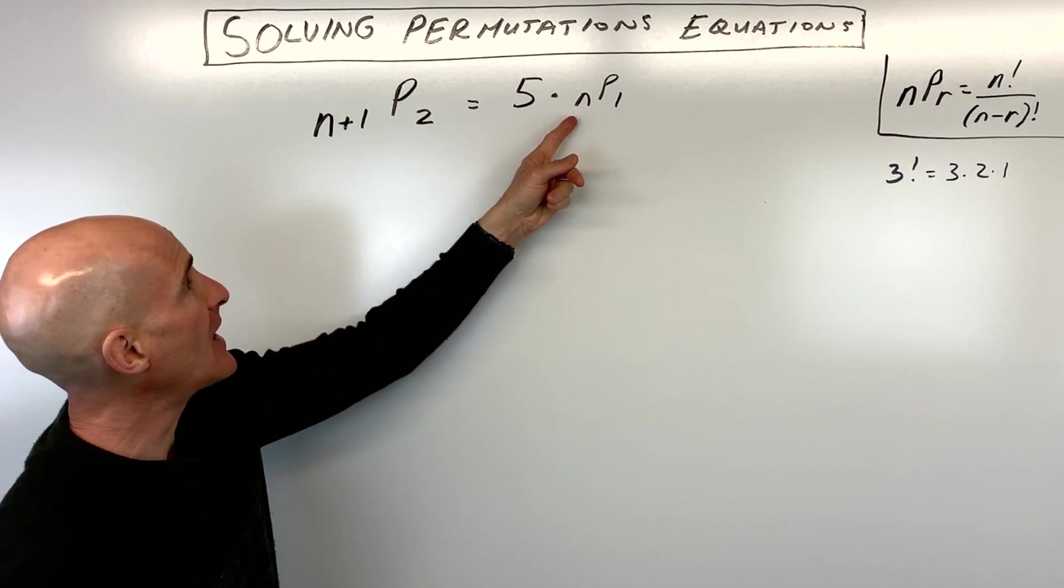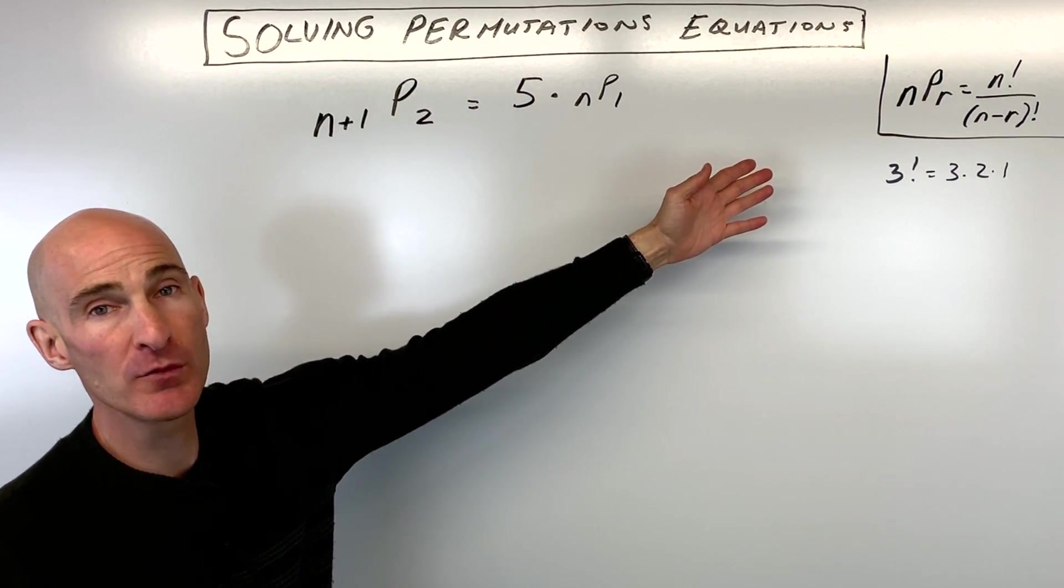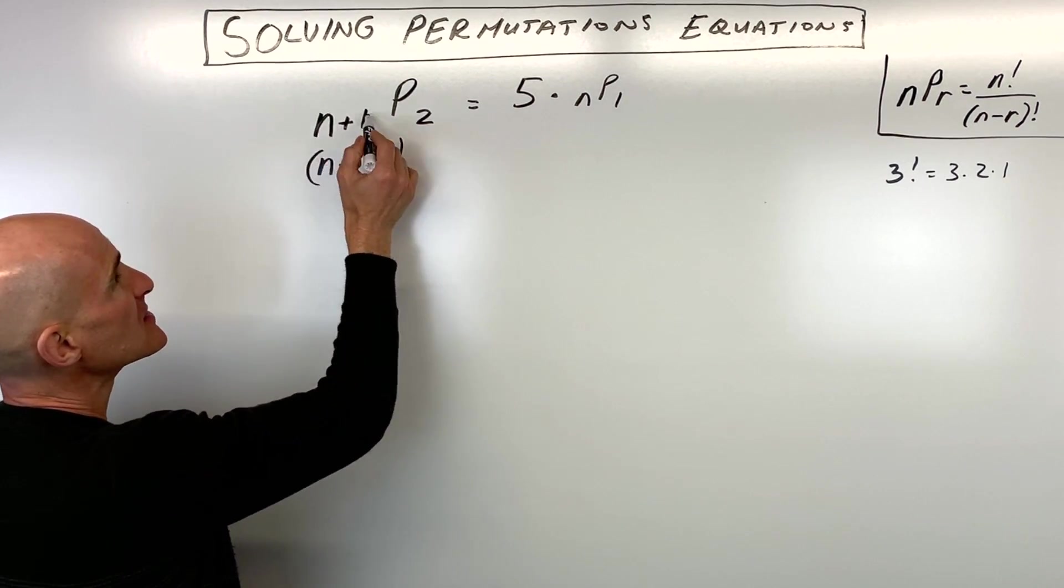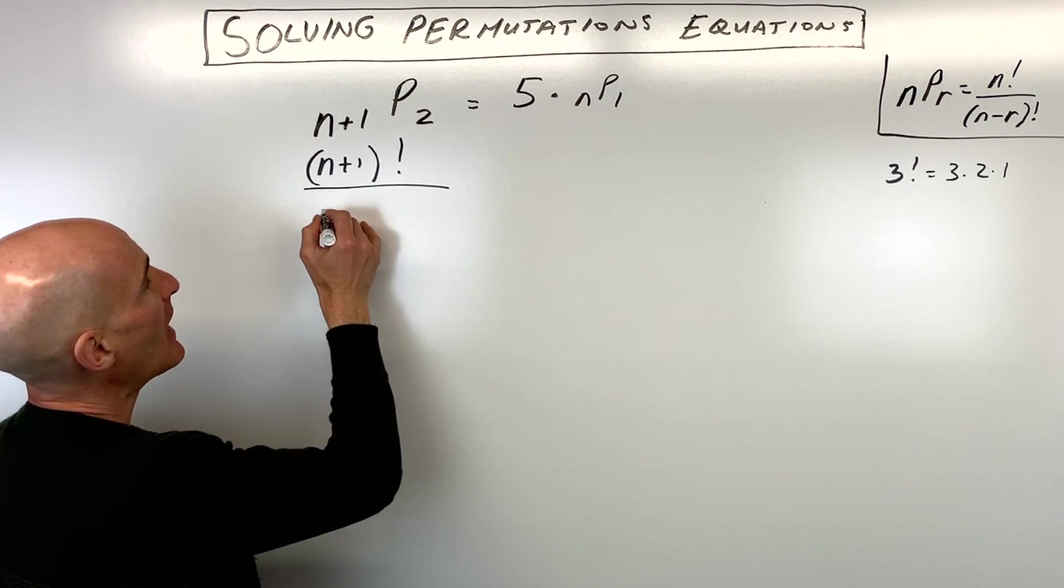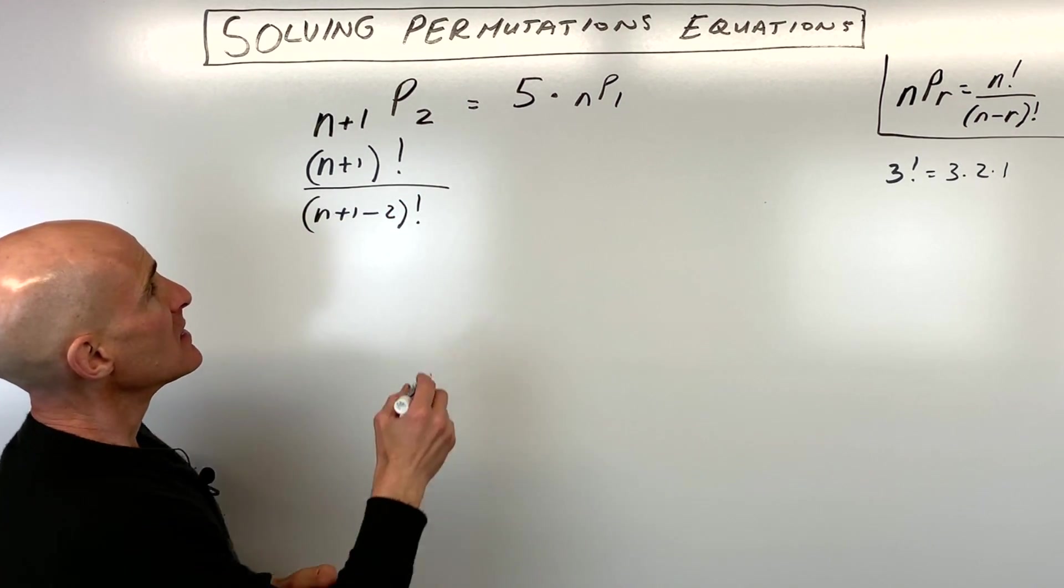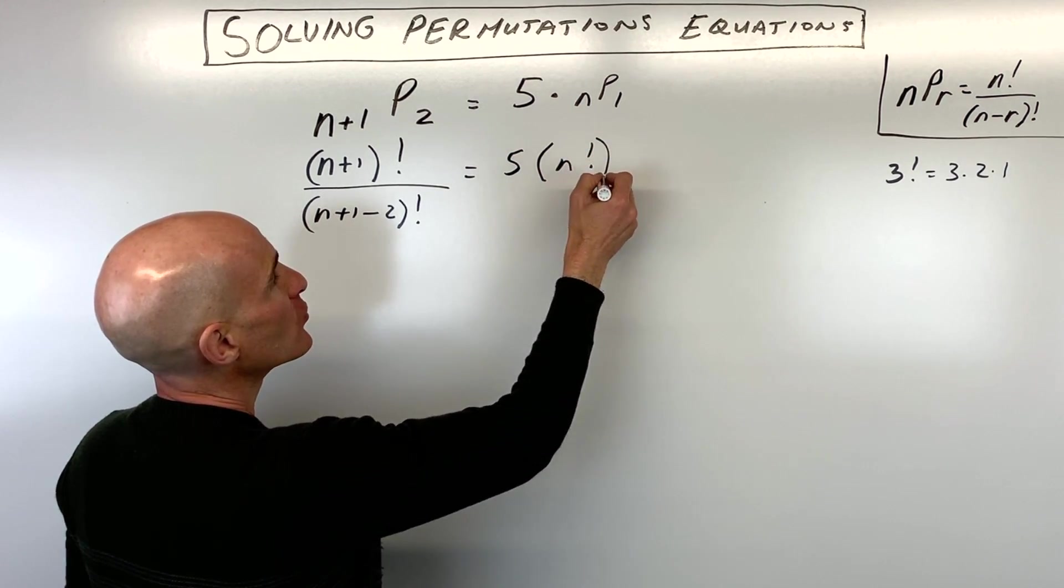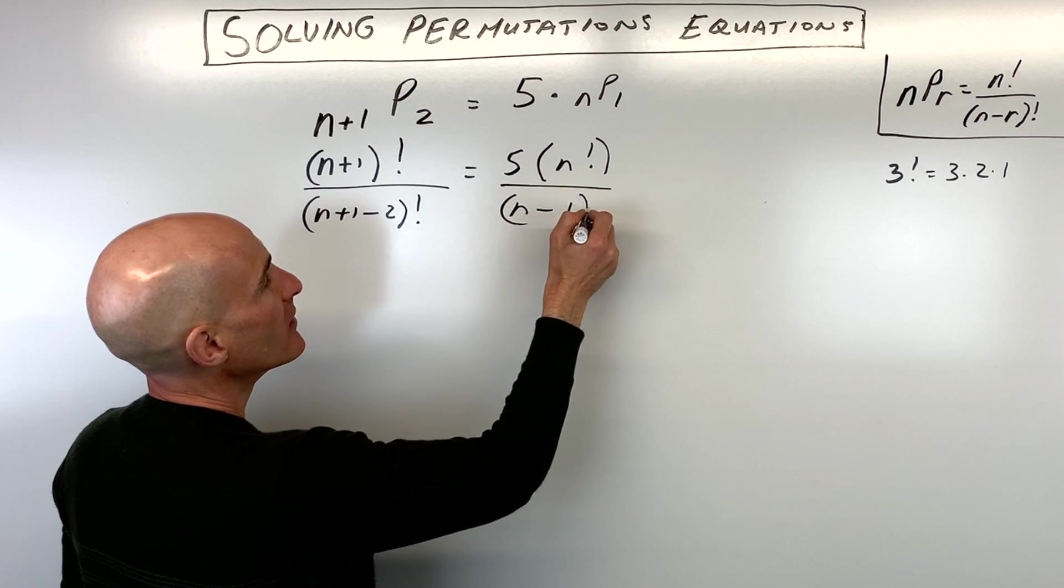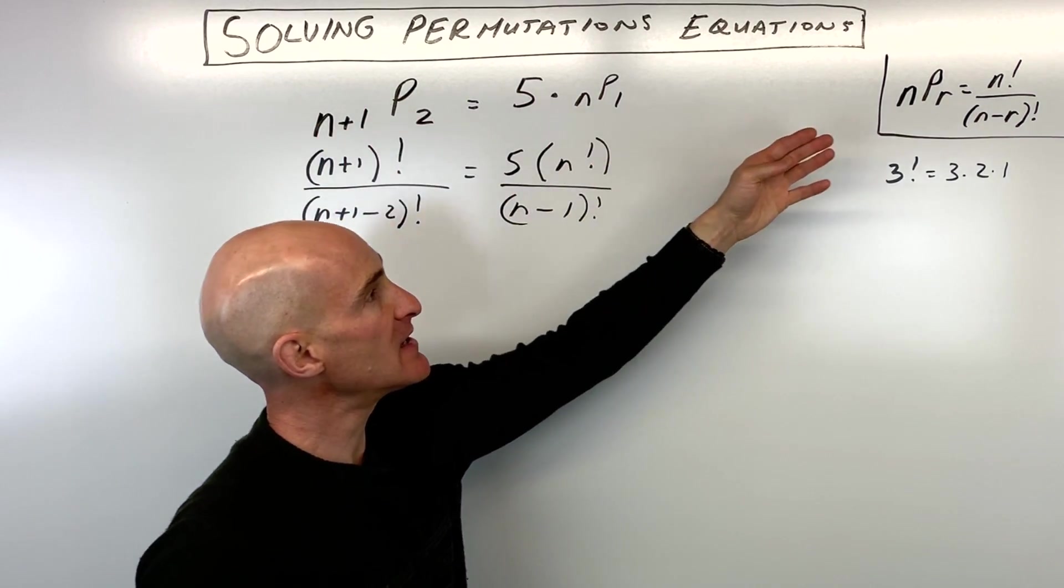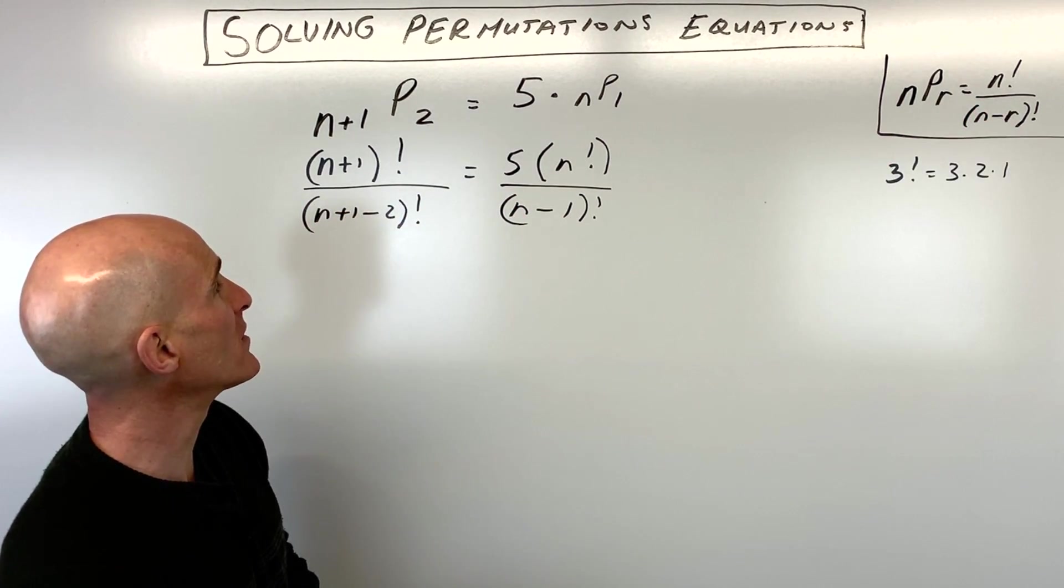So if we want to solve for n in this particular equation, we need to expand these out using that formula over there. We have (n+1) factorial divided by (n+1 minus 2) factorial equals 5 times n factorial over (n minus 1) factorial. We're just substituting where the first quantity in front of the P is the n, and whatever comes after the P is the r, into that permutation formula.